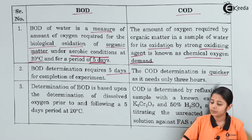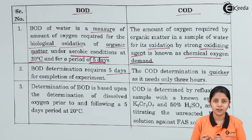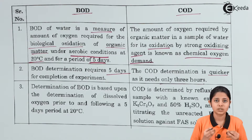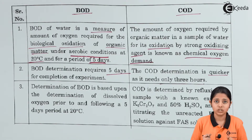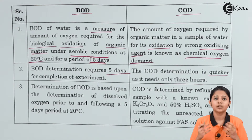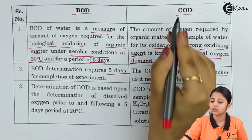The COD determination is quicker as it needs only 3 hours. Now why only 3 hours? Because the process of oxidation by oxidizing agents is not very slow. For aerobic bacteria, the bacteria will take the oxygen and food present in the water and grow. The growth of the bacteria takes time — it does not happen in a couple of hours. It needs a few days to grow. And thus BOD needs 5 days. But for COD, there is nothing to grow — we only have chemicals which react together, and this oxidation process by oxidizing agents takes place within a span of 3 hours.